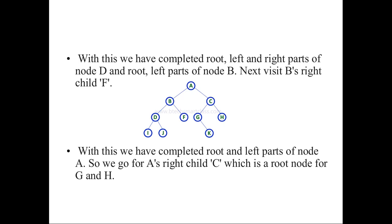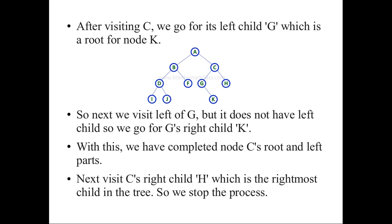With this, we have completed the root and left parts of node A. So we go for A's right child C, which is the root node for G and H. After visiting node C, we go for its left child G, which is again a root for node K. We visit the left of G, but it does not have any left child, so we go for G's right child K. With this, we have completed node C's root and left parts. Next, we visit C's right child H, which is the rightmost child in the tree. So we stop the process here.